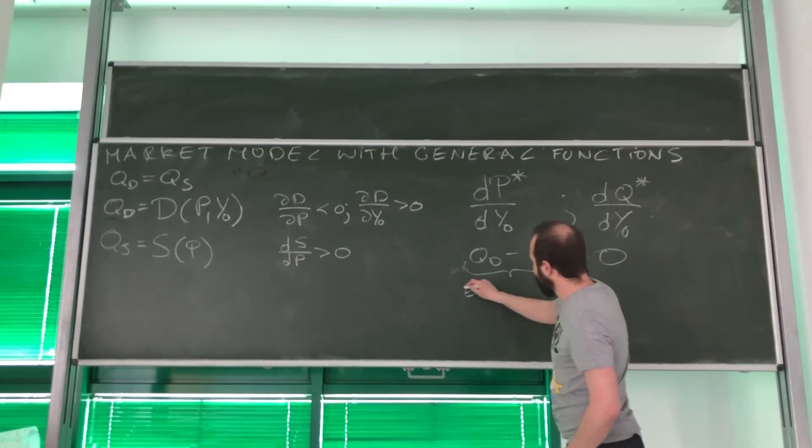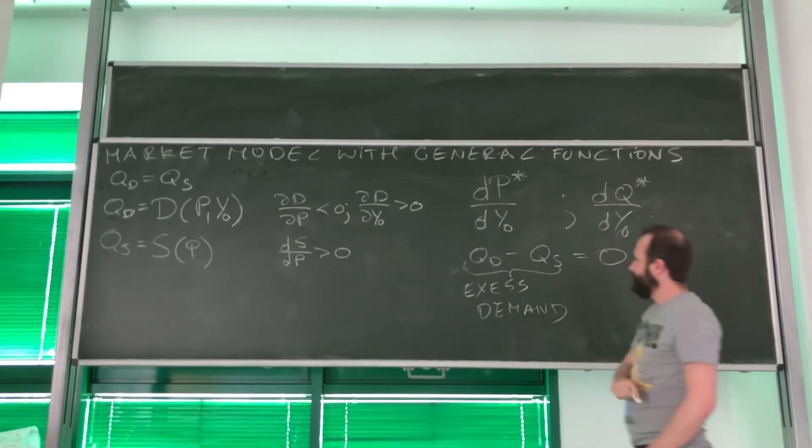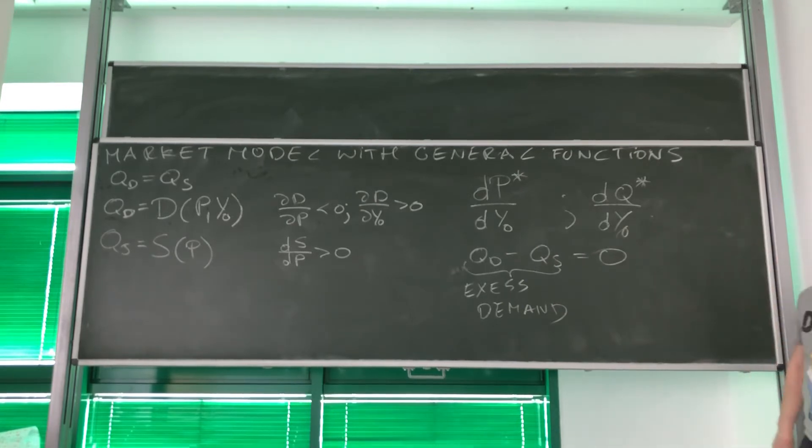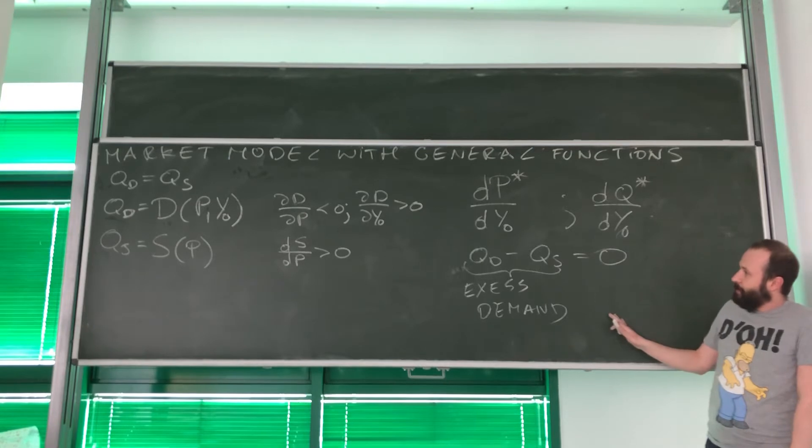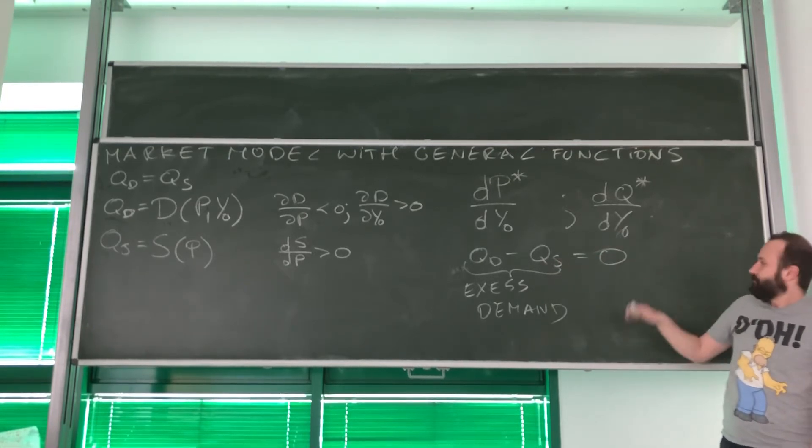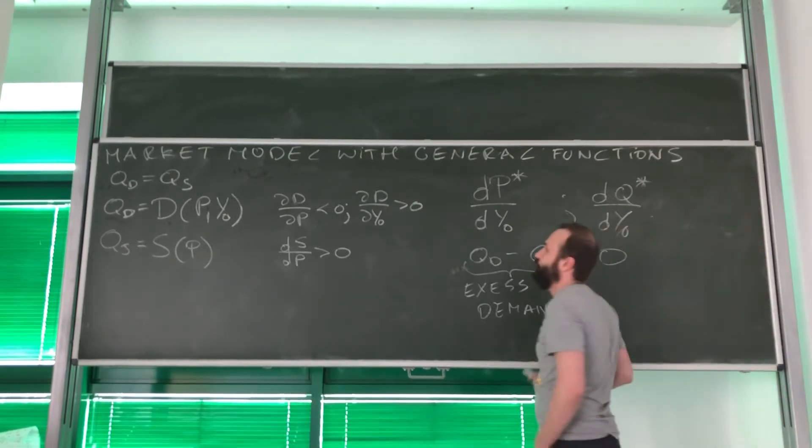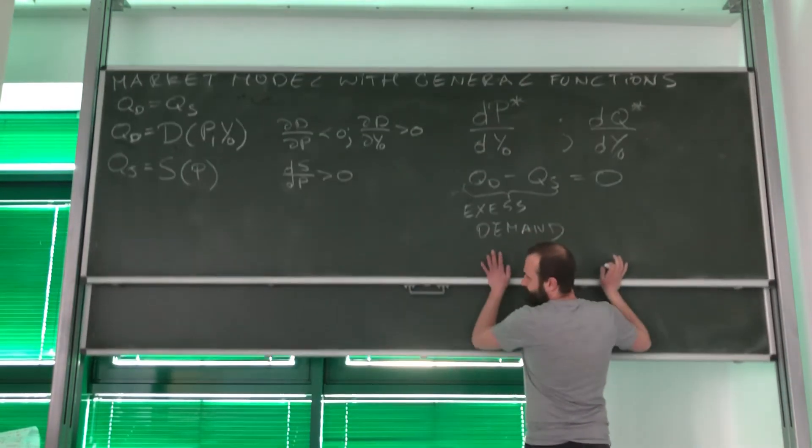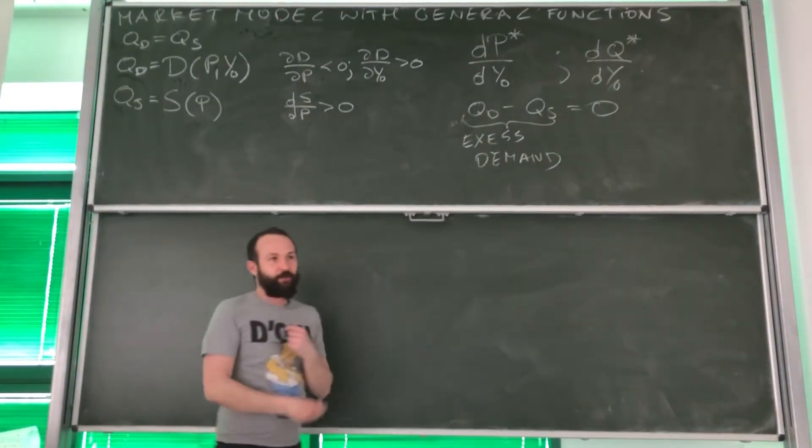What do we have here? This is the excess of demand, right? So we basically require that in equilibrium, excess of demand over the supply, we need to be equal to exactly zero. So now let's start using the rule. I hope you can see right away how we can apply it.